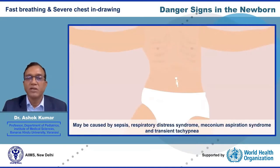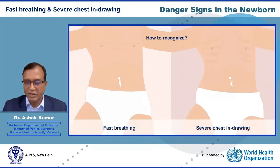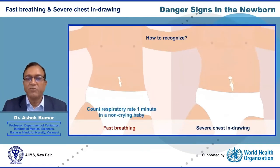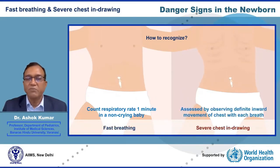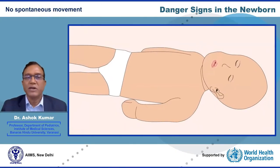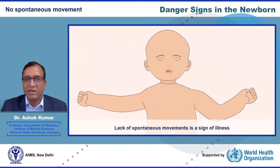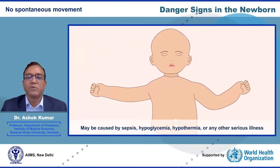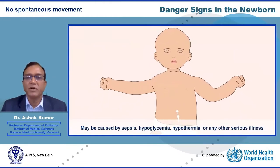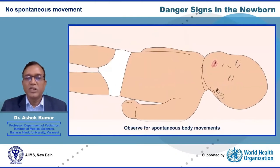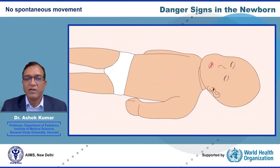Fast breathing and chest indrawing may be caused by sepsis, respiratory distress syndrome, meconium aspiration syndrome, or transient tachypnea of the newborn. For fast breathing, count respiratory rate for one full minute in a non-crying baby — rate of 60 or more per minute constitutes fast breathing. Chest indrawing is assessed by observing definite inward movement of the chest with each breath. No spontaneous movement is an important danger sign, possibly caused by sepsis, hypoglycemia, hypothermia, or other serious illness.